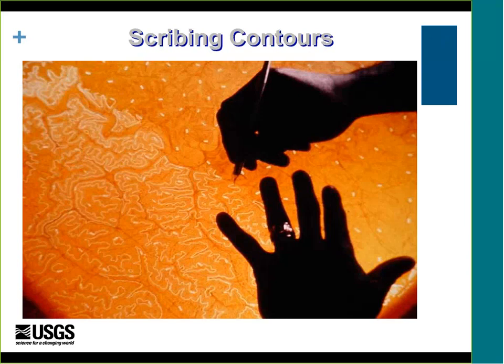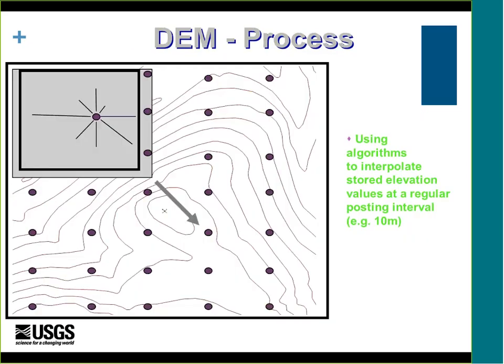A little bit about how we made the DEMs originally. During the compilation process of the maps, the contours were drawn using a stereo plotter, and then we hand-scribed the contour lines with a scribing needle. This created a negative plate, or what we call map separates, that were scanned and then interpolated using a grid over those contour lines. Once they were scanned and digitized, those points were interpolated — for example, on a 10-meter grid — as the elevations.